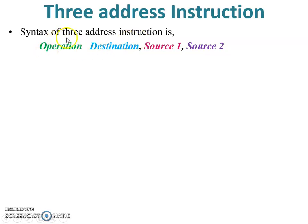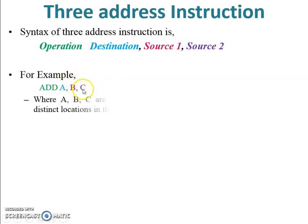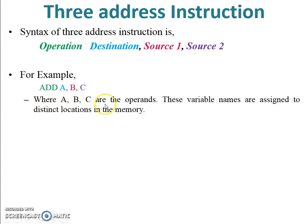The syntax of a three address instruction is: first you write the operation (opcode), then destination, then source one, and source two. There are three different addresses — that's why it is called a three address instruction. For example: ADD A, B, C — where A is the destination, and B and C are the sources.